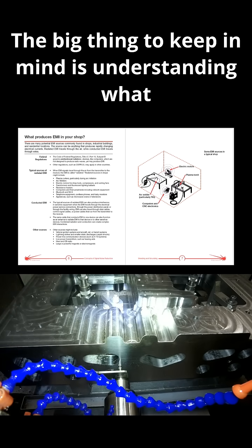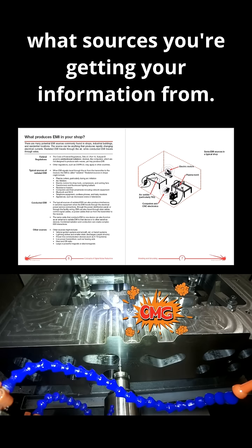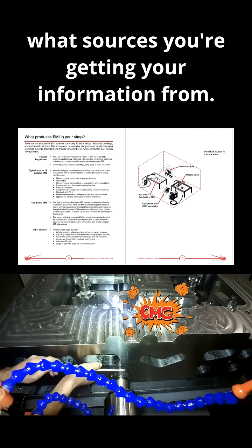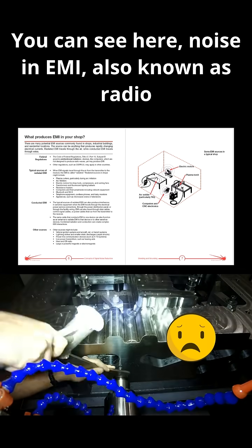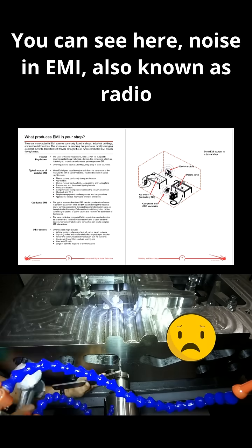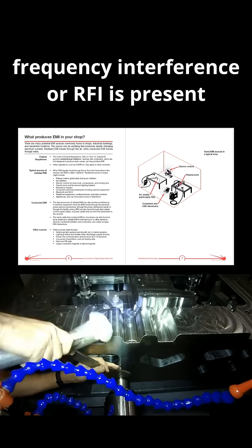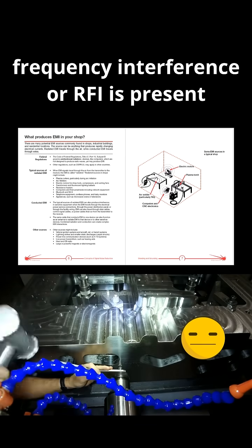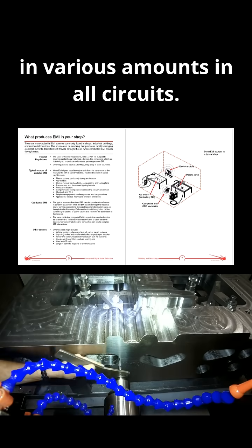The big thing to keep in mind is understanding what you're working with and understanding what sources you're getting your information from. As you can see here, noise and EMI — also known as radio frequency interference, or RFI — is present in various amounts in all circuits.